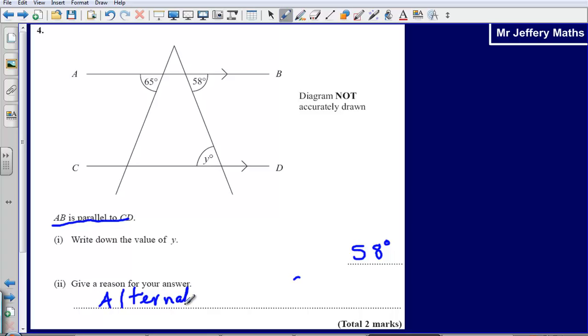That angle of 65 there has nothing to do with this question, it is probably simply there maybe to throw you off, but that 65 we don't need to do anything with that. We could say that for example this angle here would be 65, and this angle here would be 65 and so on, but that does not matter for our question. We are only asked for the angle y and y is 58 degrees.